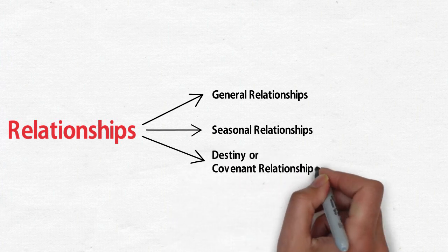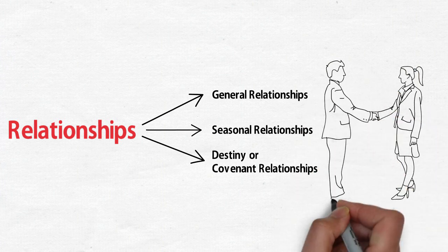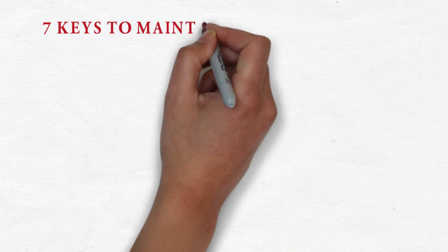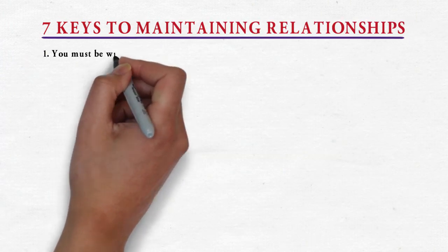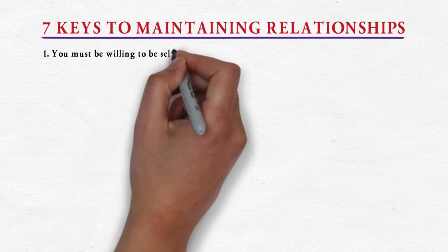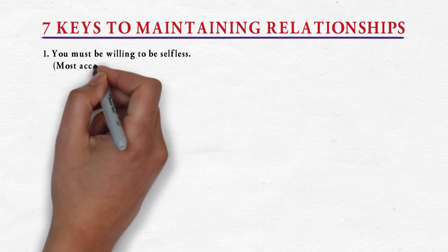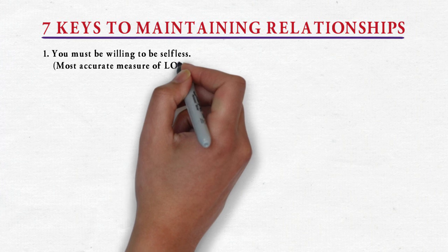Seven keys to maintaining relationships. The first key is that you must be willing to be selfless. No matter what parameter you use, the most accurate measure of love is the presence or the absence of self.